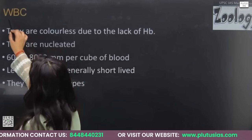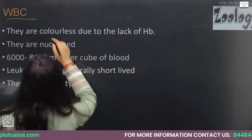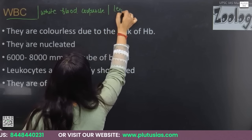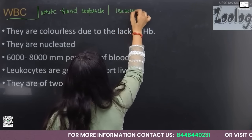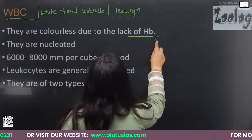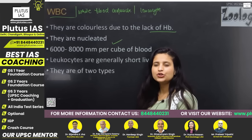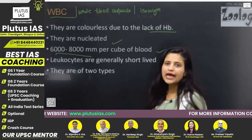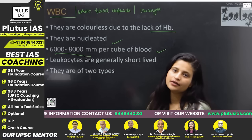WBCs are also known as white blood cells, leukocytes, or white blood corpuscles. They are colorless because they do not contain any hemoglobin pigment. Unlike RBCs, WBCs have a nucleus — they are nucleated. Compared to RBCs, they are present in lower amounts: 6,000 to 8,000 per mm³ of blood. Leukocytes are generally short-lived, with different types having different lifespans.